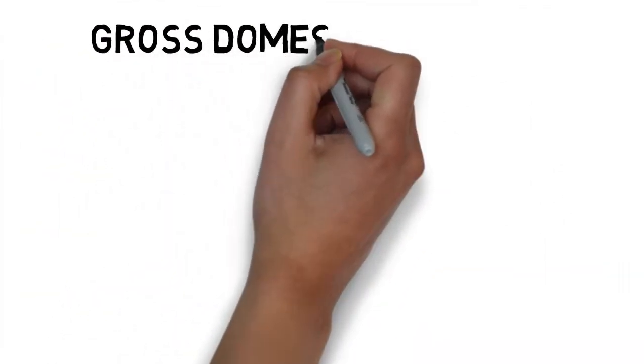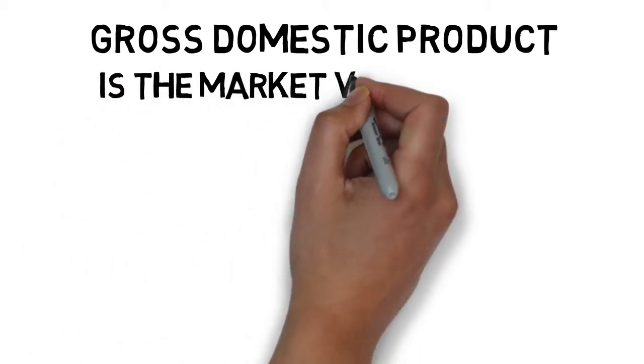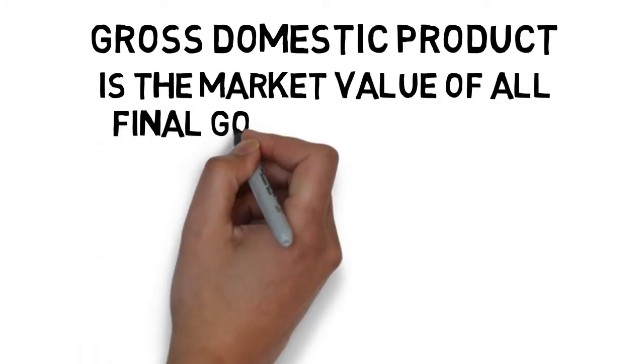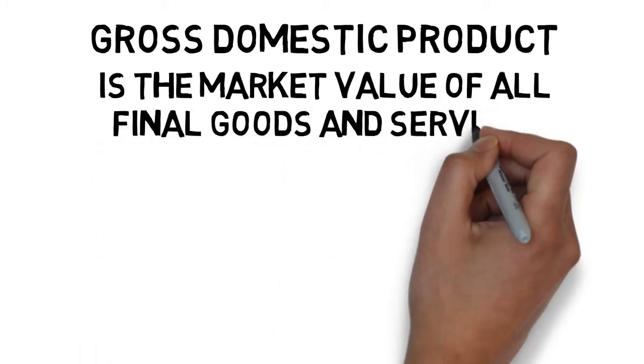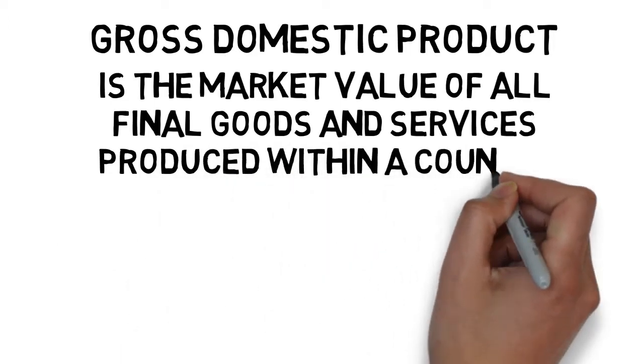This video will discuss how we measure the level of economic activity in the macro economy. To do this, we're going to discuss a concept called Gross Domestic Product. Gross Domestic Product in basic terms is the market value of all final goods and services produced within a country in a given time period.